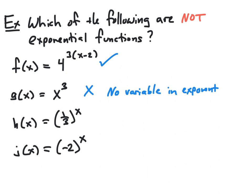For h of x, we have the formula 1 third to the x. One third is a positive number that is not equal to 1, so this would be an exponential function with a base of 1 third and an initial value of 1, since there is an implicit 1 in front. For j of x equals negative 2 to the x, notice that negative 2 is not a positive number. Our base is negative, which is not allowed. The base of an exponential function must always be positive and not equal to 1, and that condition fails for j.